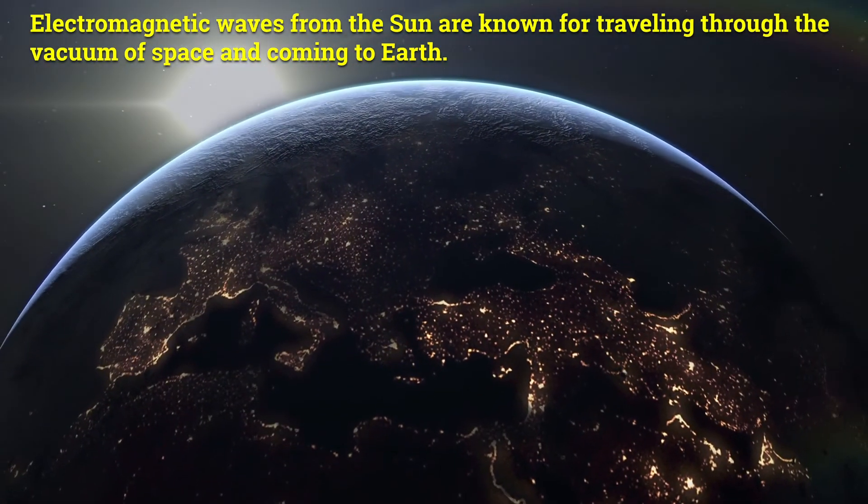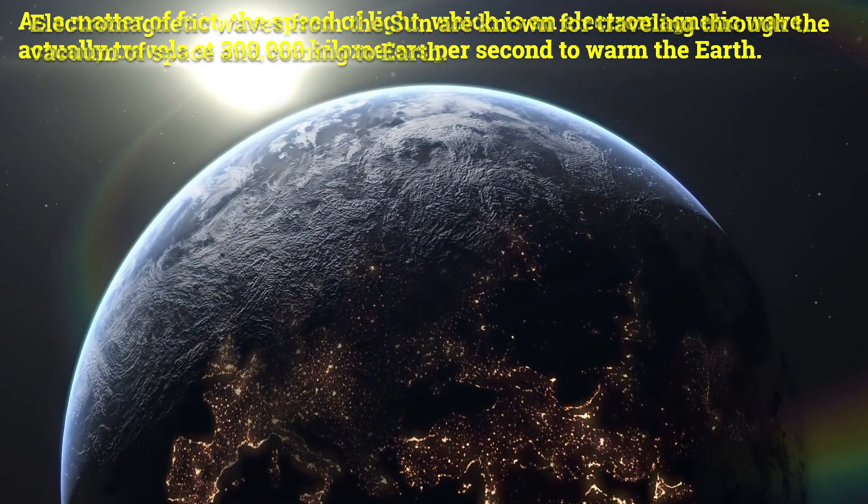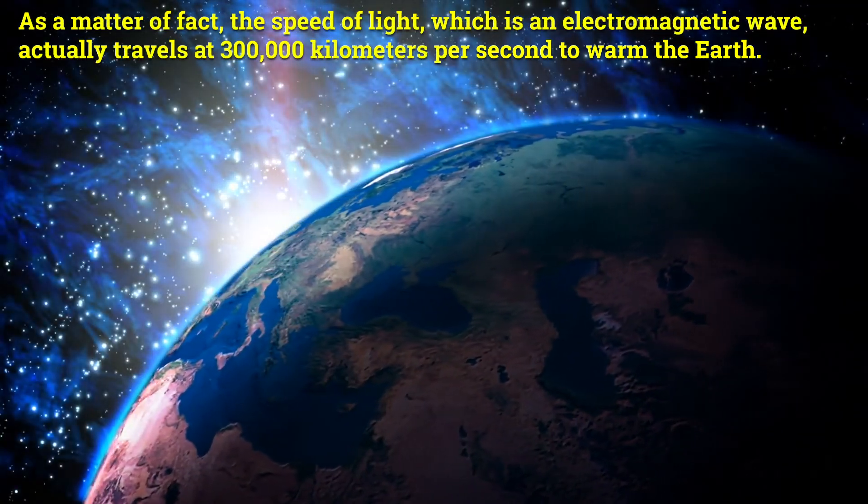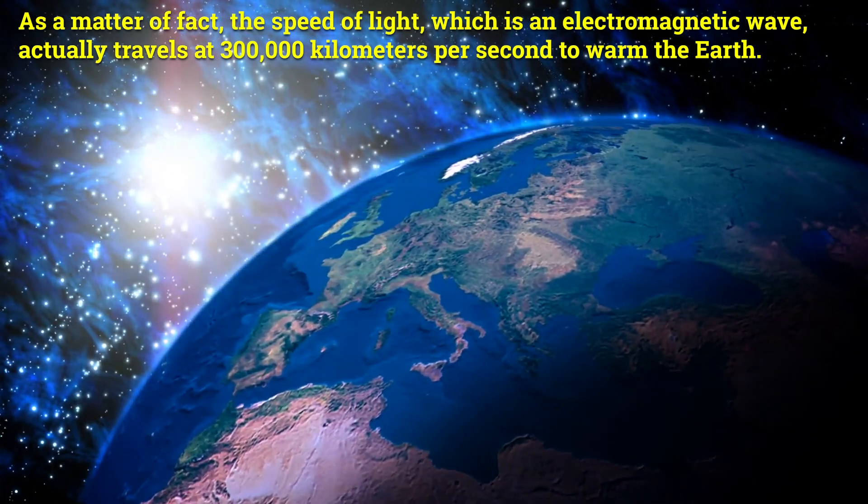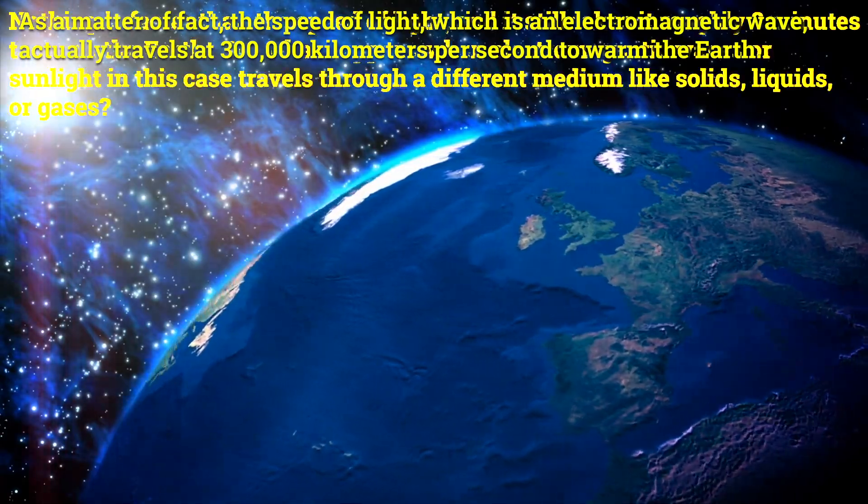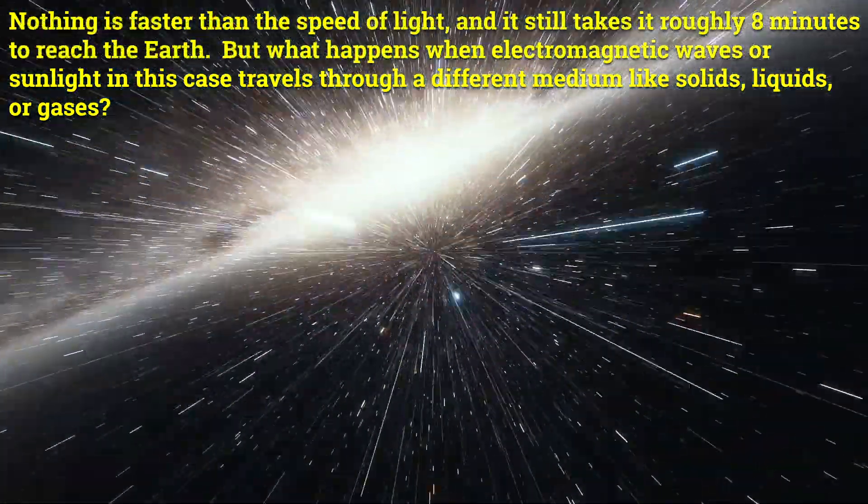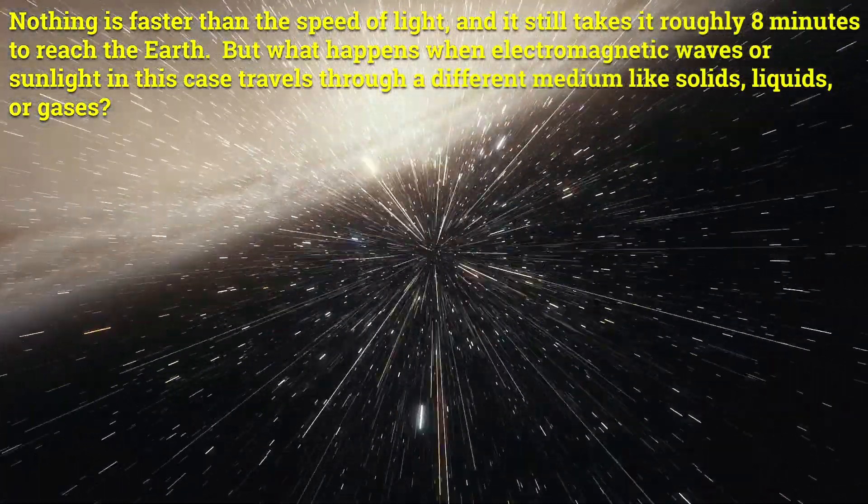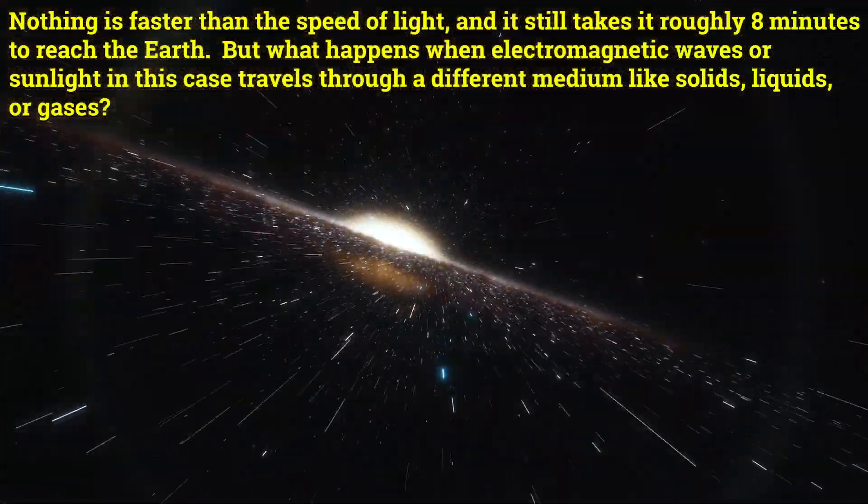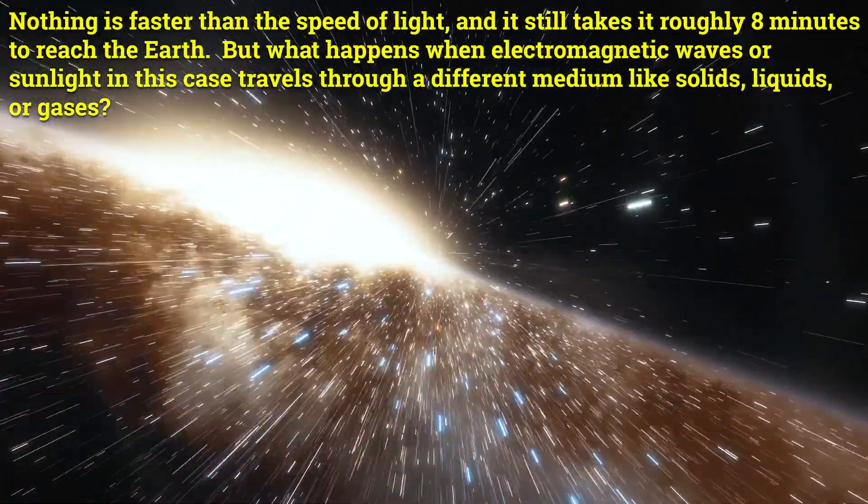Electromagnetic waves from the sun are known for traveling through the vacuum of space and coming to Earth. As a matter of fact, the speed of light, which is an electromagnetic wave, actually travels at 300,000 kilometers per second to warm the Earth. Nothing is faster than the speed of light, and it still takes roughly eight minutes to reach the Earth. But what happens when electromagnetic waves, or sunlight in this case, travels through a different medium like solids, liquids, or gases?